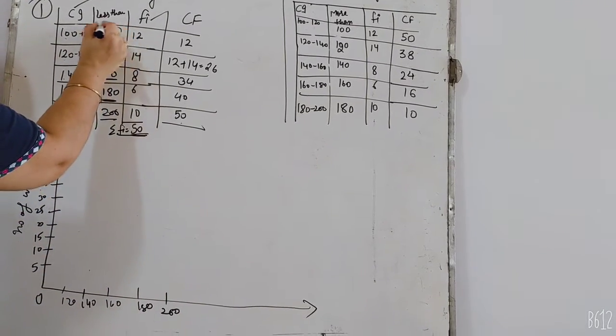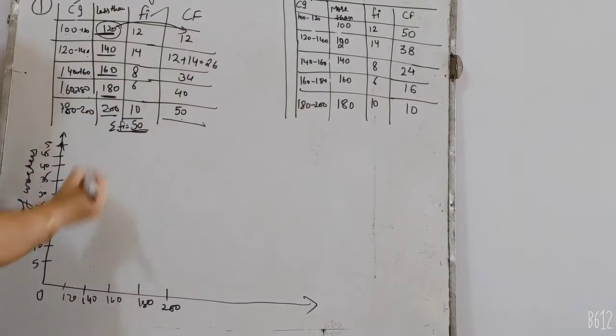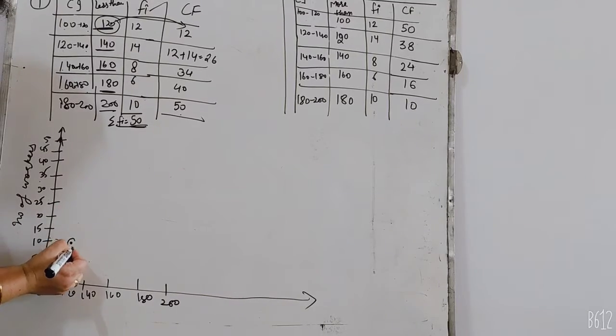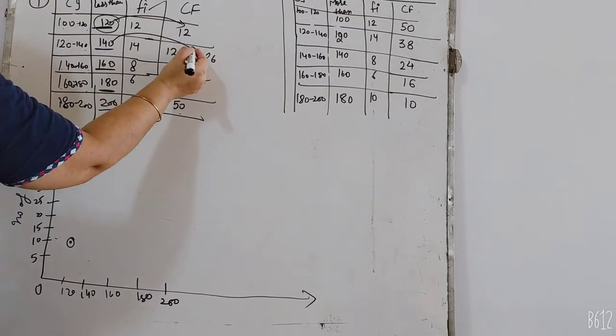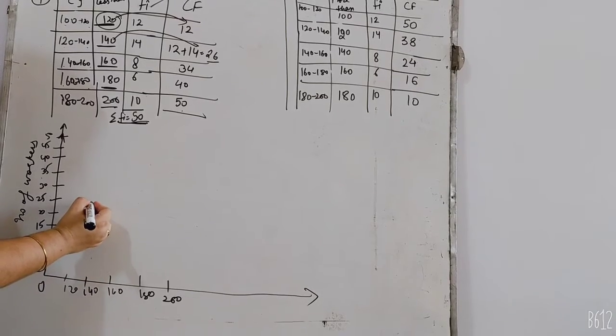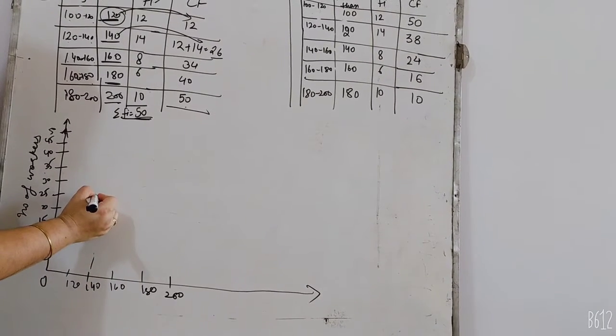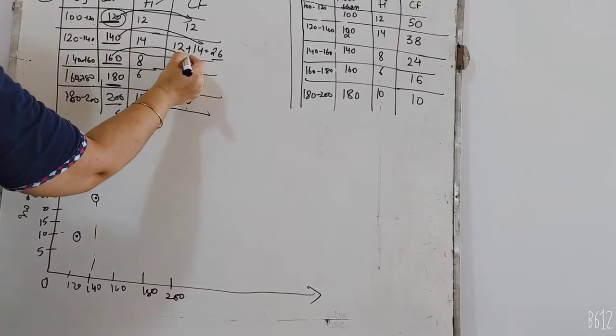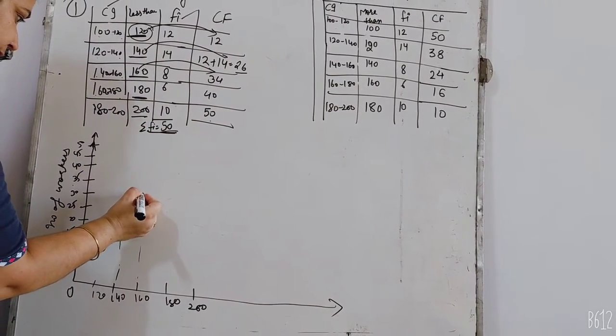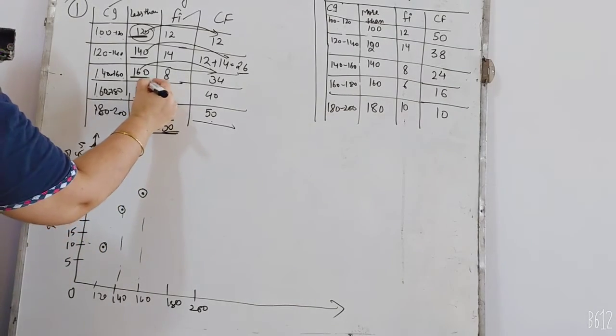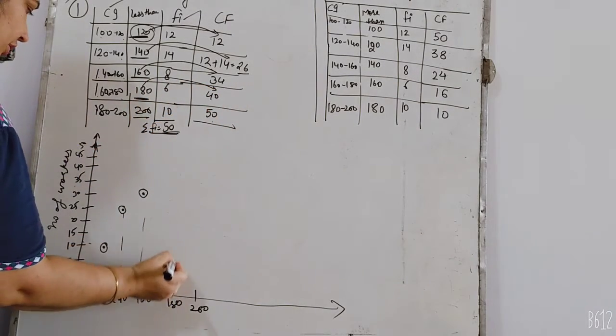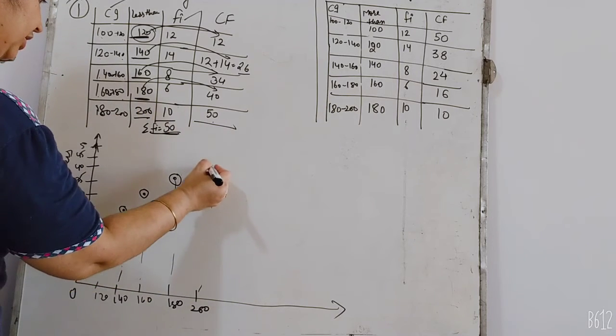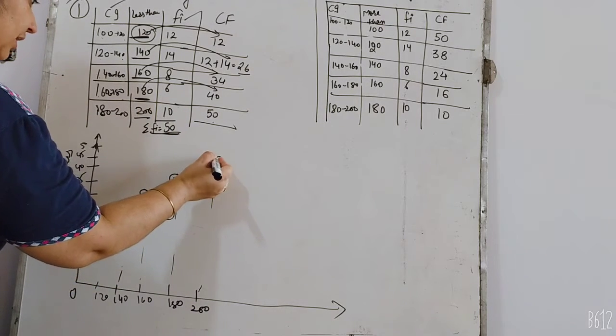How do you draw the graph? After 120, 140 with 26. Next, 160, 34. Where is the graph? Here. 180, 40. This 40. Last chart, 200, 50. Finally, you can join a curve.